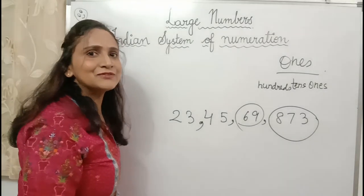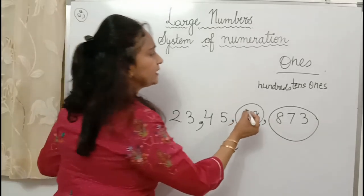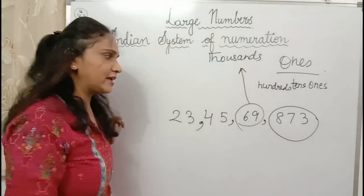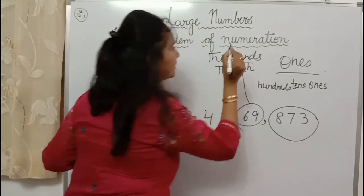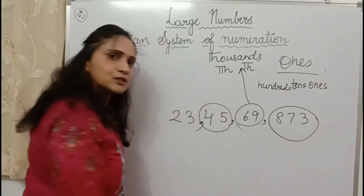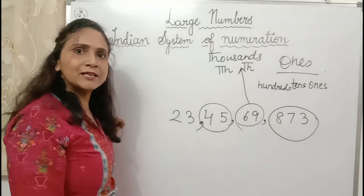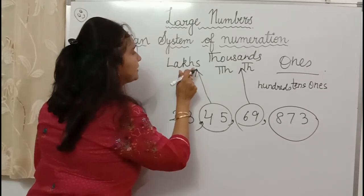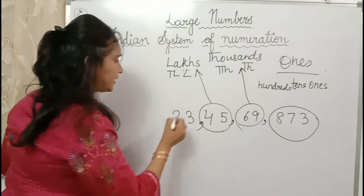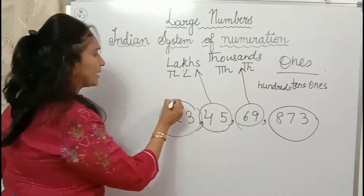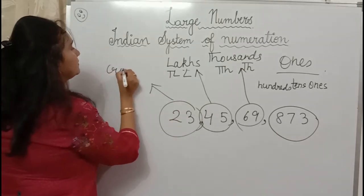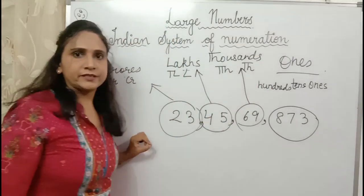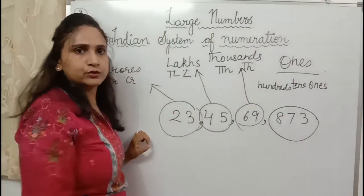Next family — whose family is this? It's my uncle's family, with uncle and aunts. This family is the thousands family, and members are thousands and ten thousands. Then this is my aunt's family — this is the lakhs family, and members are lakhs and ten lakhs. And this is the grandparents' family — this is the crores family, and members are crore and ten crore. So these families — ones, thousands, lakhs, and crores — are called periods.